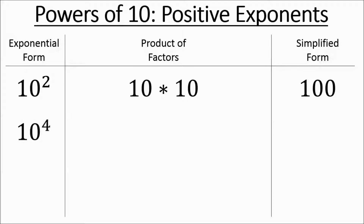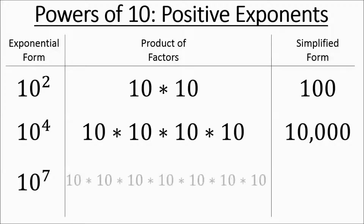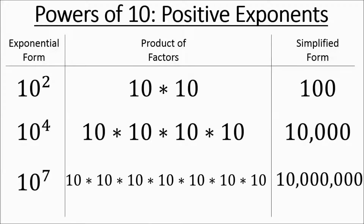So if you have 10 to the power of 4, you'd write out the product of factors, and then in simplified form it's 10,000. 10 to the power of 7 — you'd write out seven 10s, and then you'd work it out to 10 million.